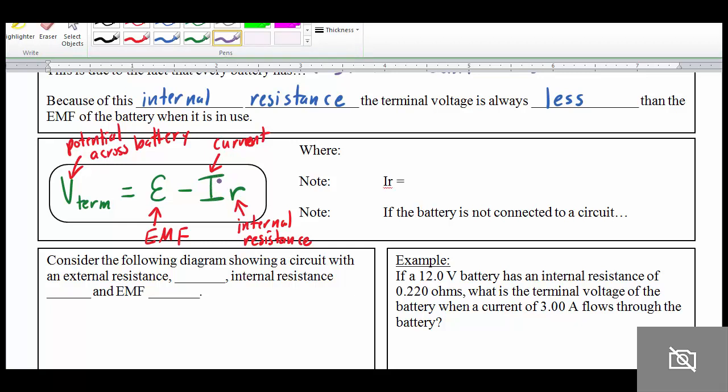So note that if you take I times R, remember current times resistance. Well, a current times a resistance represents a voltage. So you could ask yourself, what does I times R represent? And since it's the current through the battery times the internal resistance of the battery, then this basically represents the internal voltage drop. And you can think of that as the amount of voltage that is needed just for the current to push its way out of the battery.